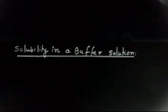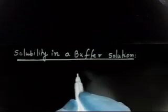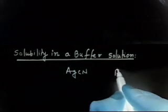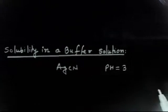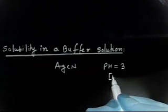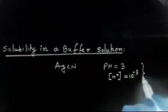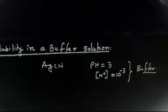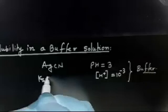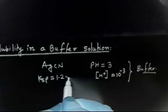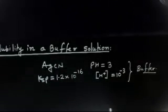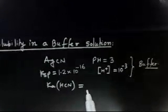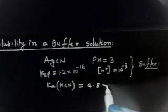The question asks us to calculate the solubility of AgCN in a buffer solution. The buffer has a pH of 3, which means [H⁺] = 10⁻³. The given values are: Ksp for AgCN = 1.2×10⁻¹⁶, and Ka for HCN = 4.8×10⁻¹⁰.